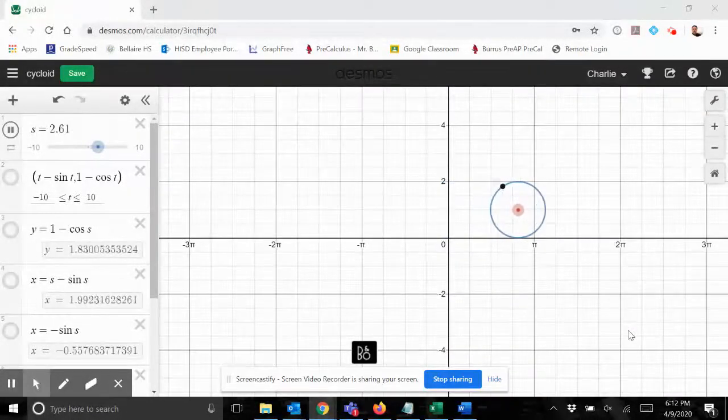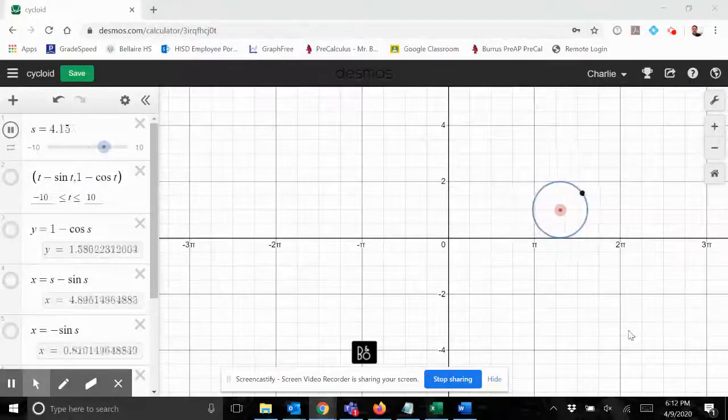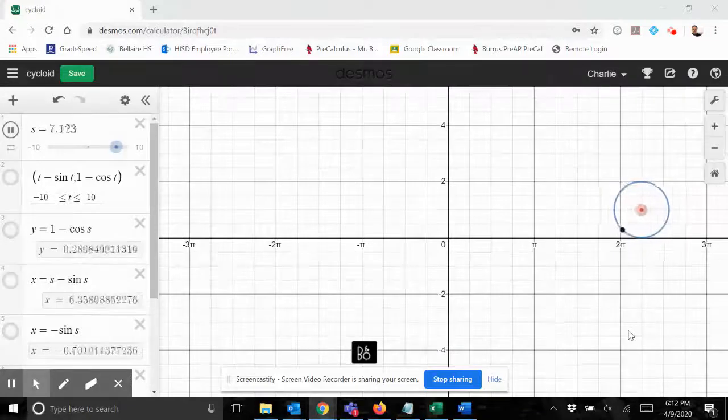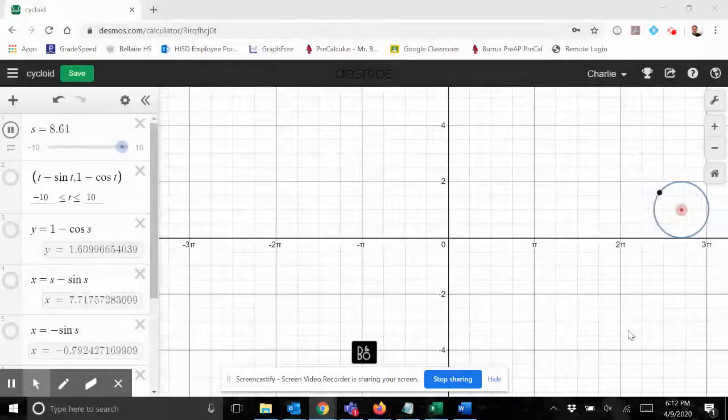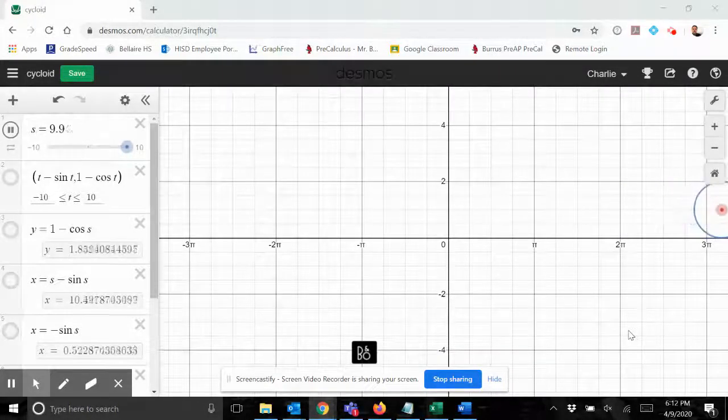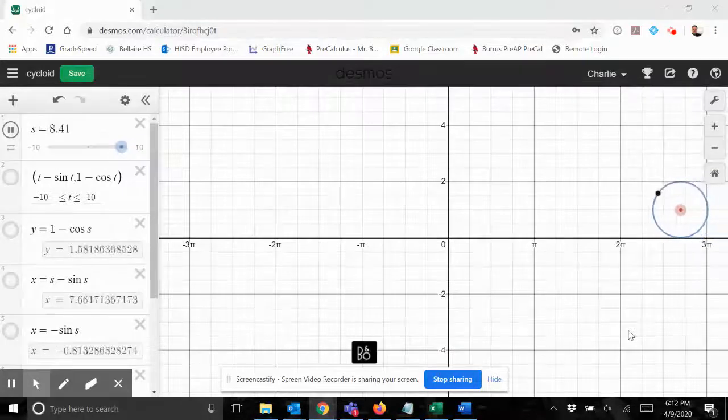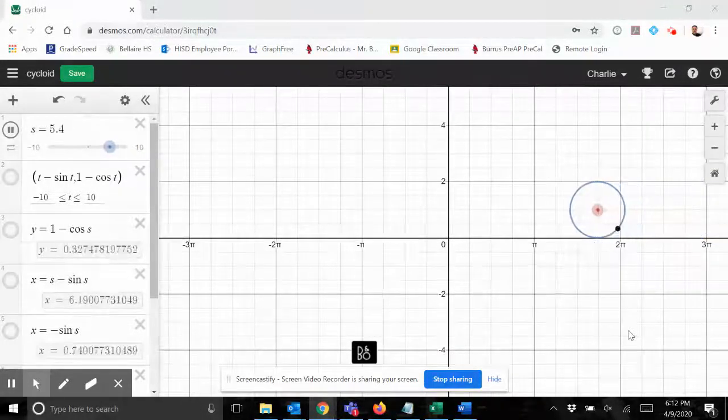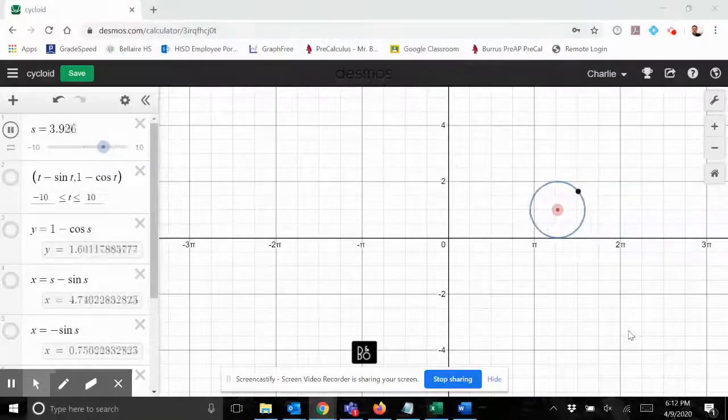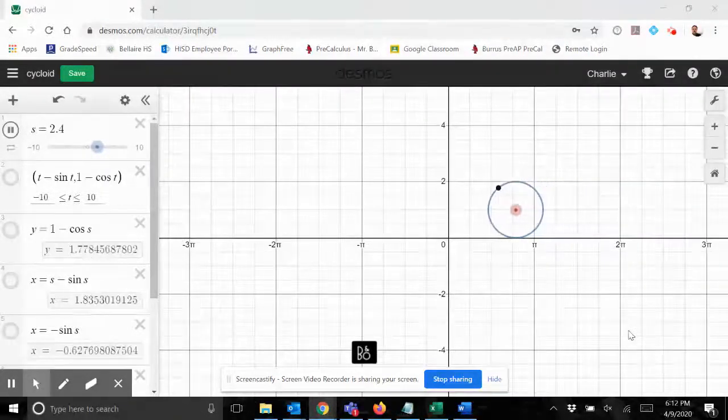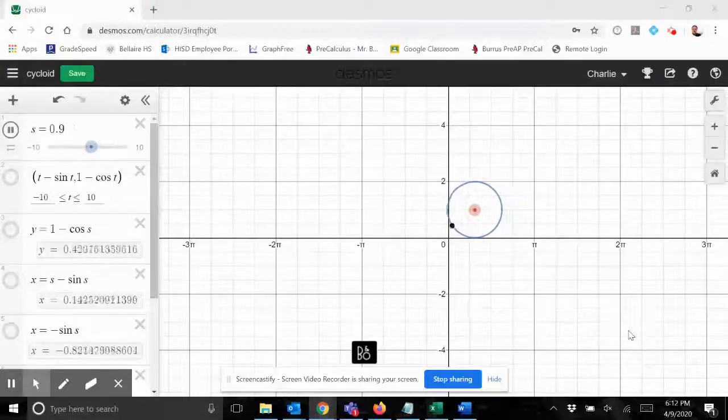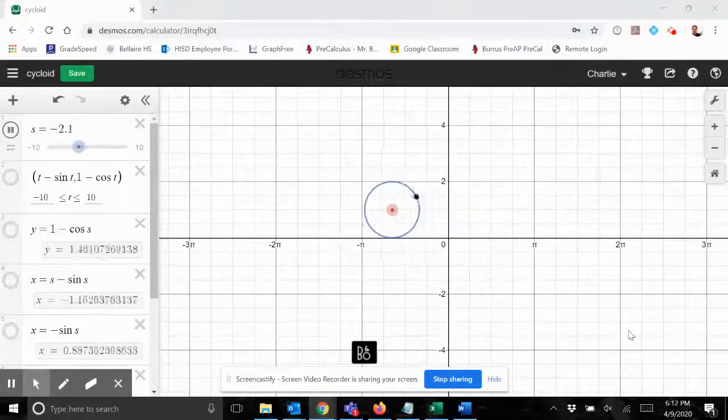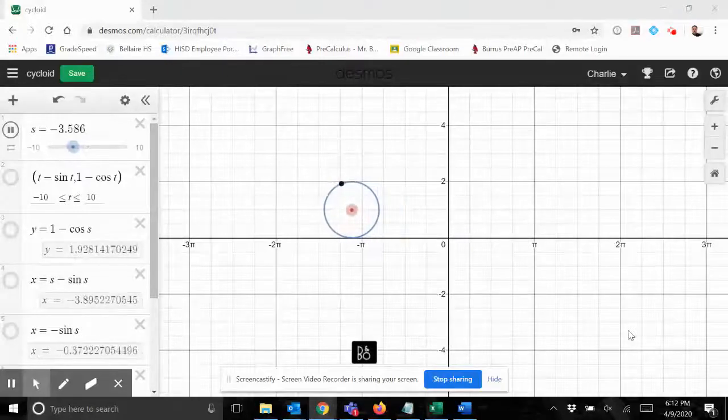There's a point on that circle and you can see that the point is fixed to a particular position on that circle. As it rolls along, the point moves around the circle. Let's see what else we notice about that circle. The radius is obviously one, the center is one unit above the x-axis.